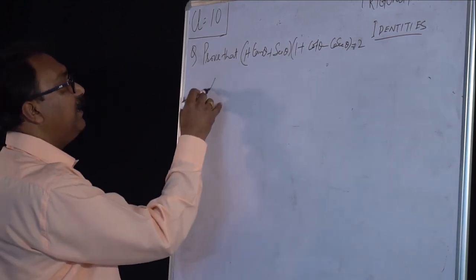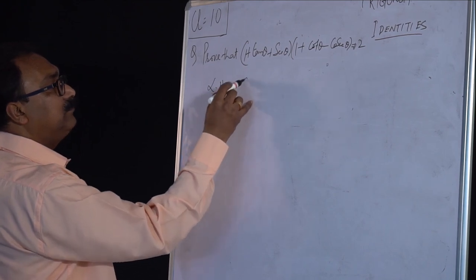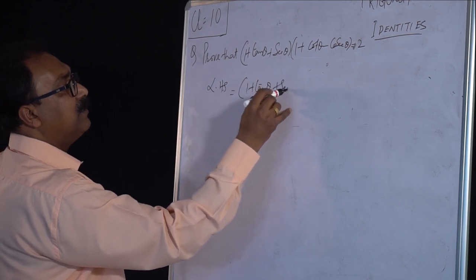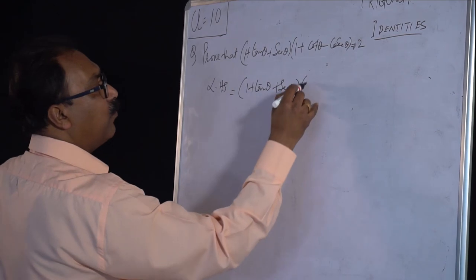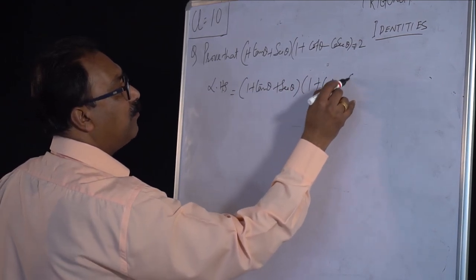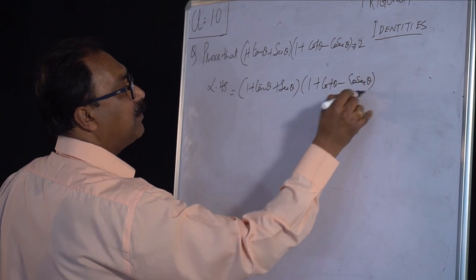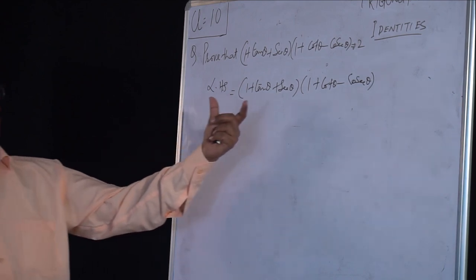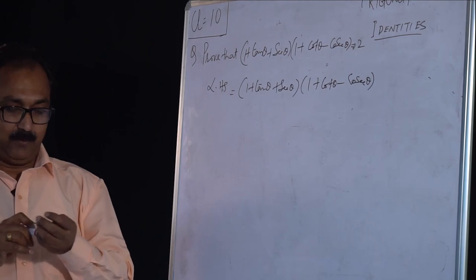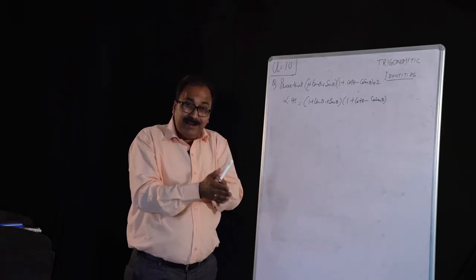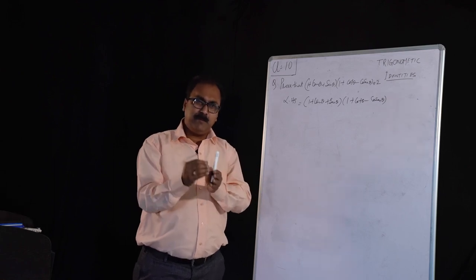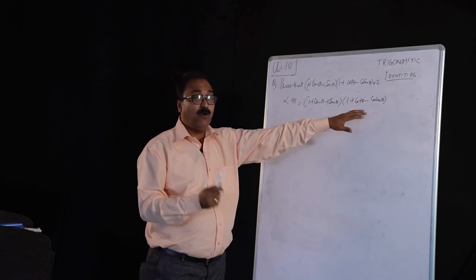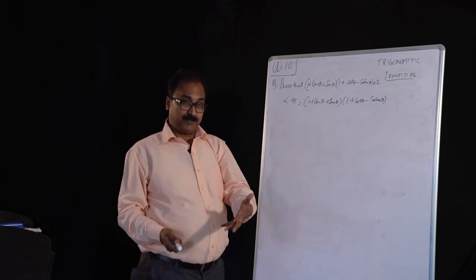We write the LHS: left hand side is (1 plus tan theta plus sec theta)(1 plus cot theta minus cosec theta). Then we have to prove it equals 2. Look here — for these Pythagorean identity type questions, always keep in mind that if in any way we can change the trig functions into sine and cos, the problem may be a little lengthy but you can definitely solve it. So tan, sec, cot, cosec — all have to be changed into either sine or cos.